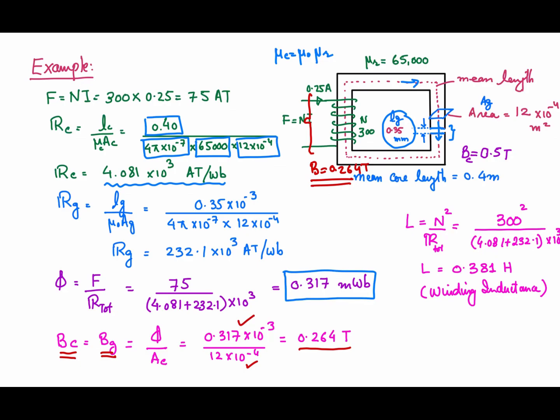Typically a core material is selected and the air gap is adjusted to tune the inductance to the required value. This is very commonly used in power electronic converter circuits where inductances must be set according to design calculations. By playing with the air gap size, you can adjust the inductance of the winding.